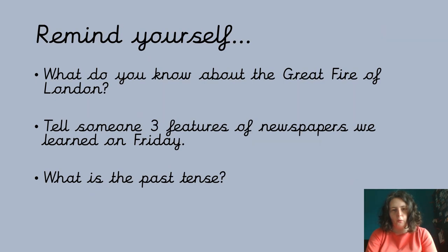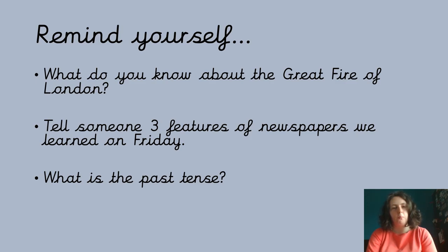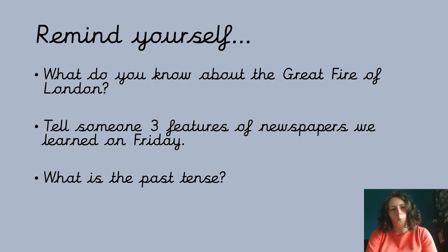Before we get started with all that, you might want to remind yourself what you know about the Great Fire of London, because remember that's what we're going to be doing eventually — writing our own newspaper report about that. Remind yourself of some facts that you found interesting. Tell someone, either in school or at home, three features of newspaper reports that we learned on Friday, and if you're feeling really fancy you can even explain what their job is. Think about yesterday's English lesson — what is the past tense? Can you think of some examples? What's its job? Pause the video and have a chat or have a think.